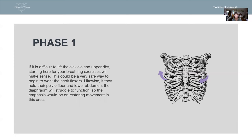Rather than focusing on a diaphragmatic breath specifically, focus on the areas that were difficult to move. Spend time breathing into the upper quadrant or lower abdominals — whichever is restricted — to get mobility and movement through that area of the body. In order to stabilize the neck, we have to have good function below it. If we're gripping in the back of the ribs or in the abdominals, we won't be stabilized optimally, and that could affect the neck.